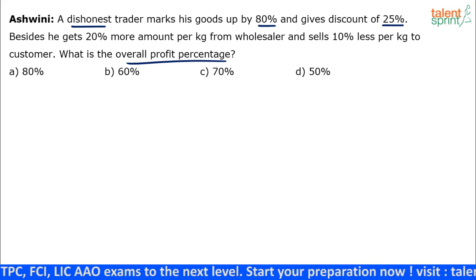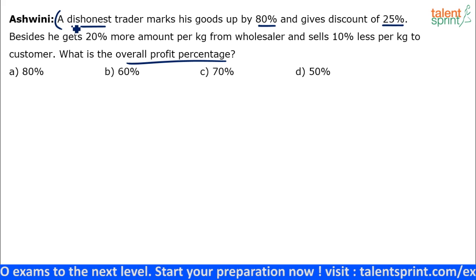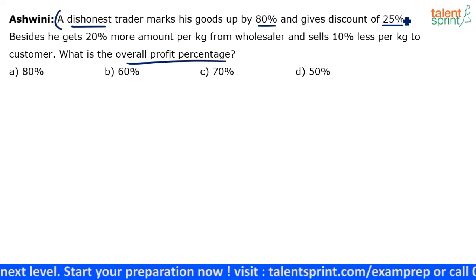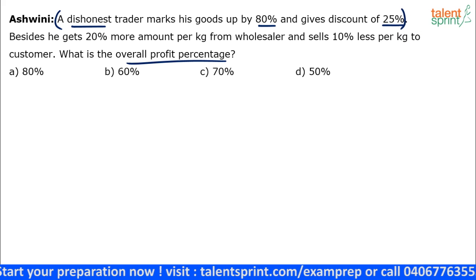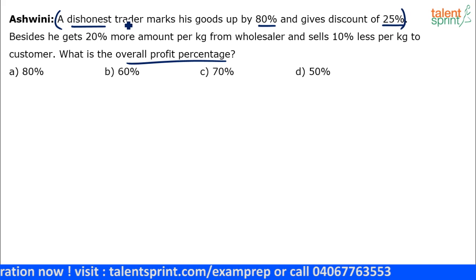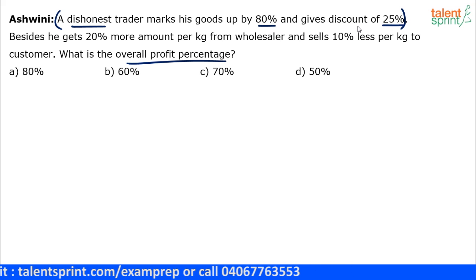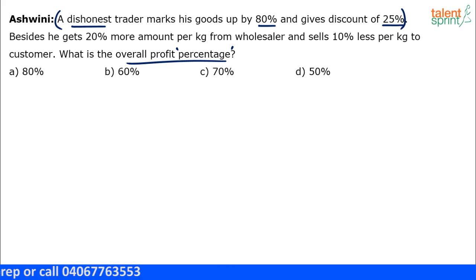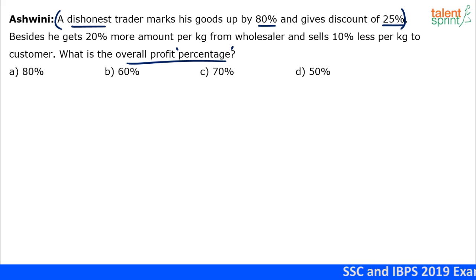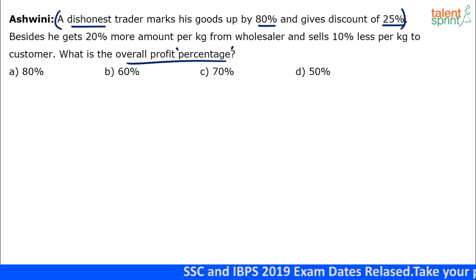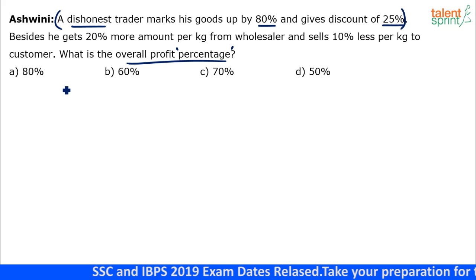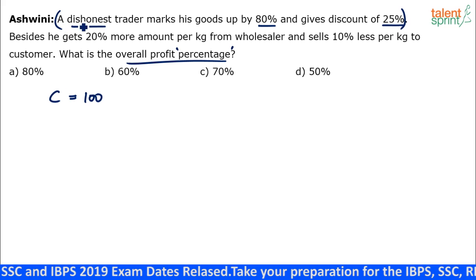We'll solve the question in two parts. First, focus on the markup and discount: a trader marks his goods up by 80 percent and gives a discount of 25 percent. Whenever a question involves percentage-based calculation and asks for profit or loss percentage, you can assume initial values to be 100 and calculate accordingly — it gives the correct answer. So let's assume the cost price is 100.